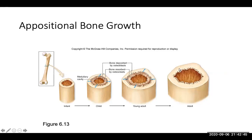Appositional growth is bone growth in diameter. You can see how bone is resorbed by osteoclasts and how bone is then deposited, increasing the diameter of the bone.